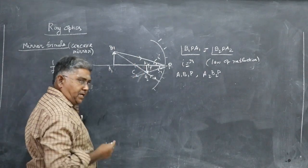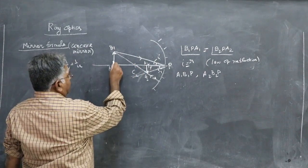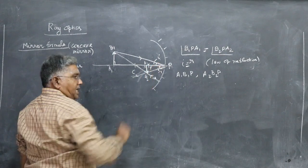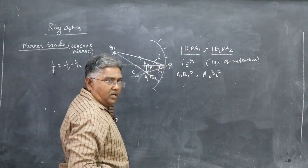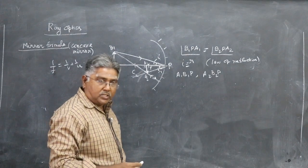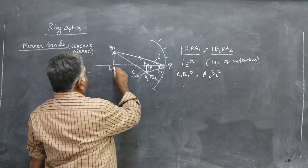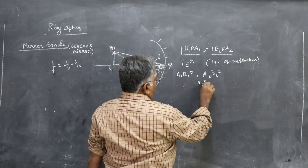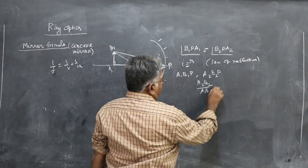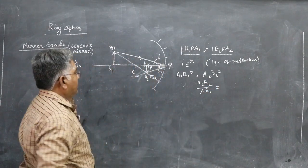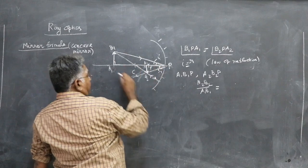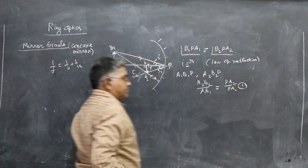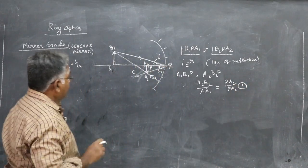Triangles A₁B₁P and A₂B₂P are similar because: this angle is 90°, this angle is 90°, and angle i equals angle r (law of reflection), so the third angle is automatically equal. Therefore, by the property of similar triangles, A₂B₂ / A₁B₁ = PA₂ / PA₁. This gives us equation 1.